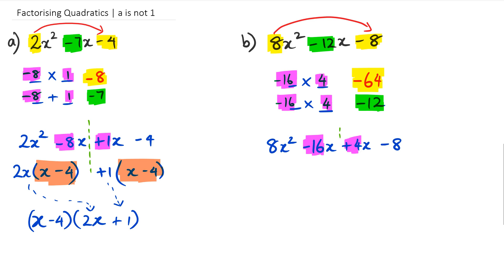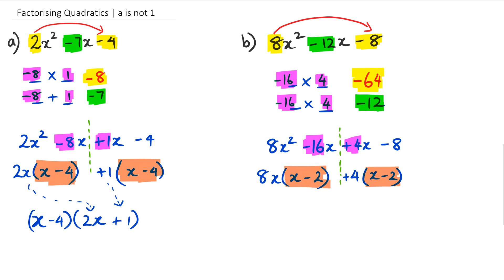Once I do that I split it in the middle and factorize the left-hand side. On the left-hand side, 8x is a common factor so I take it out and end up with x minus 2. On the right-hand side, 4 is a common factor so I take out plus 4 and get x minus 2. Now x minus 2 is a common factor of both sides, so I take out x minus 2 and what's left over is 8x plus 4. The 8x comes from the left and the plus 4 comes from the right.